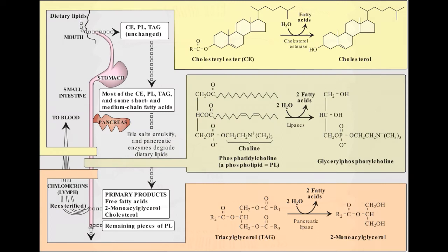Degradation of dietary lipids by pancreatic enzymes — dietary TAG, cholesteryl esters, and phospholipids are enzymatically digested by pancreatic enzymes whose secretion is hormonally controlled. TAG molecules are too large to be taken up efficiently by the mucosal cells of the intestinal villi. They are, therefore, acted upon by an esterase, pancreatic lipase, which preferentially removes the fatty acids at carbons 1 and 3.